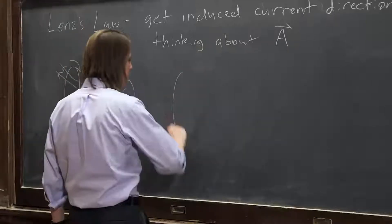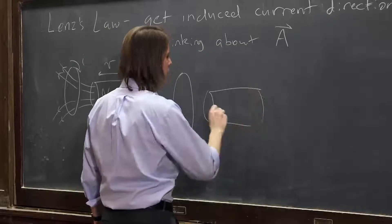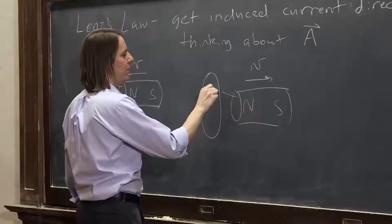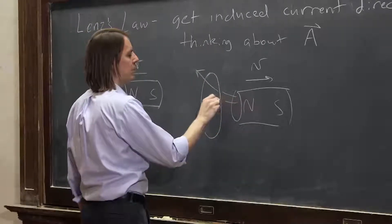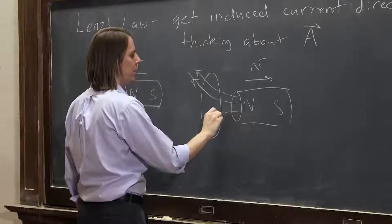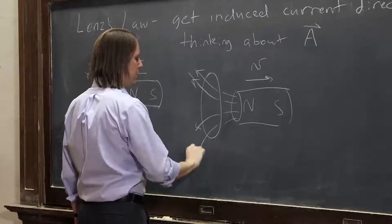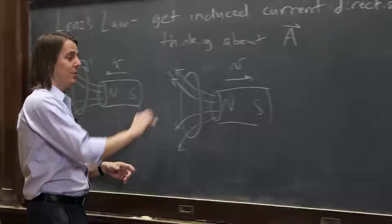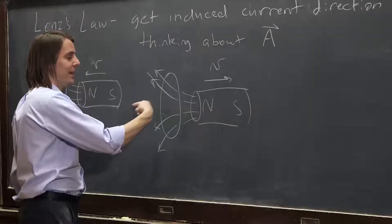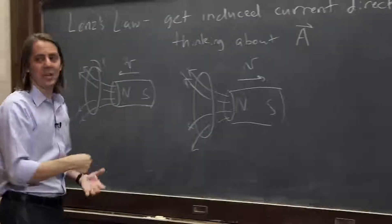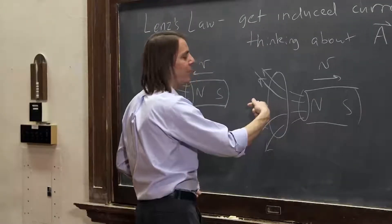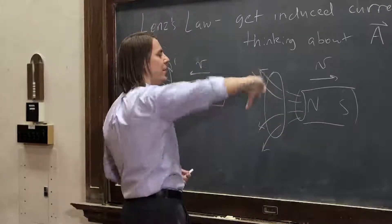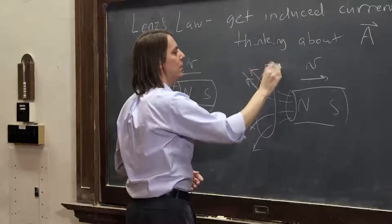Let's do another one. Same loop, north and south, but now we're pulling the magnet back. We have a B field pointing this way, but it's getting smaller. Lenz's law says you want to oppose the change. If the B field this way is getting smaller, you want to make a B field this way — you oppose the change in the B field. So if you want to make a B field this way, the right-hand rule says you go around that way, and now the current goes that way.